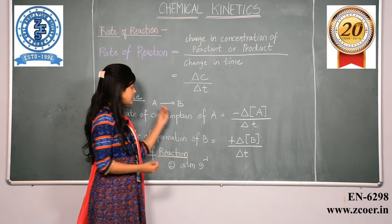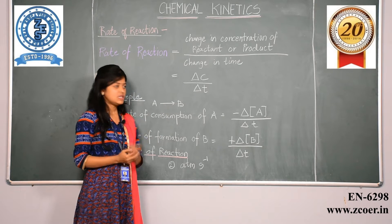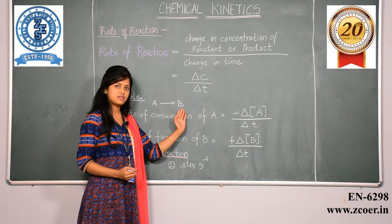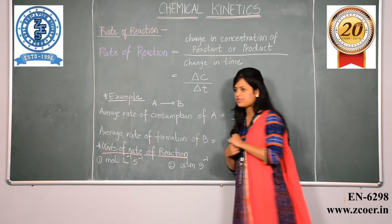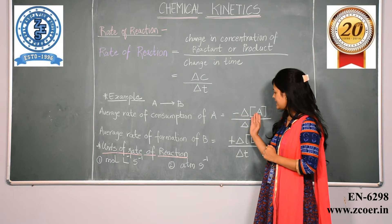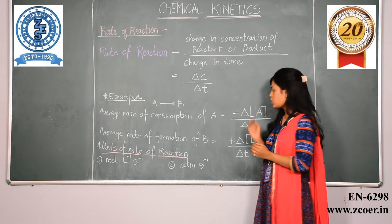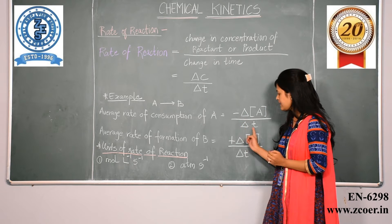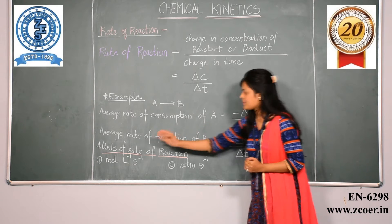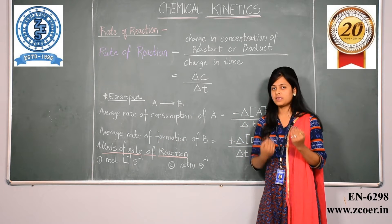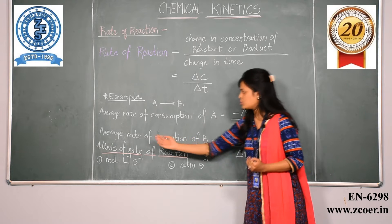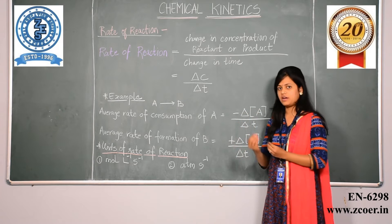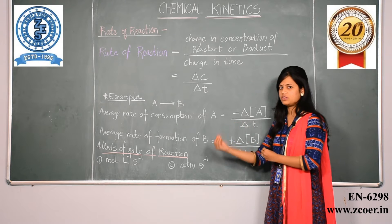Now let us look at an example to understand this better. Here we have a reactant A which forms a product B. The average rate of consumption of A is equal to delta concentration of A divided by delta T. Similarly, the average rate of formation of B is equal to delta concentration of the product B divided by the time taken for the formation.